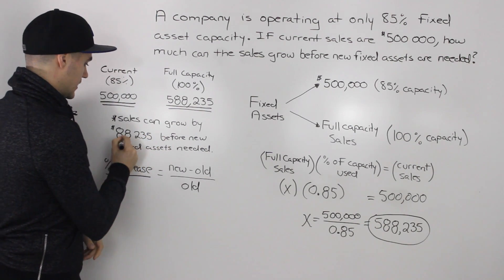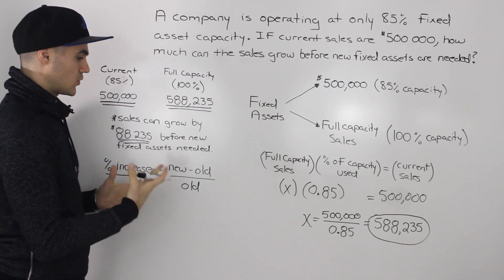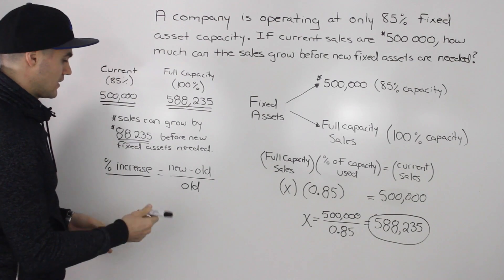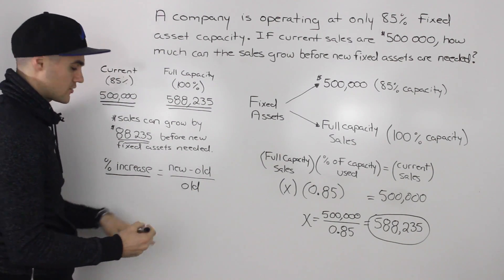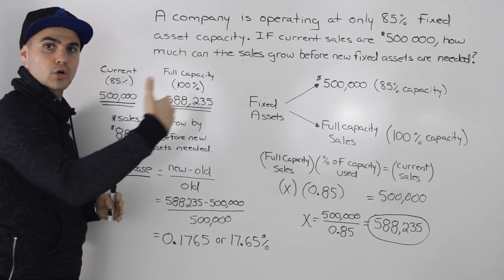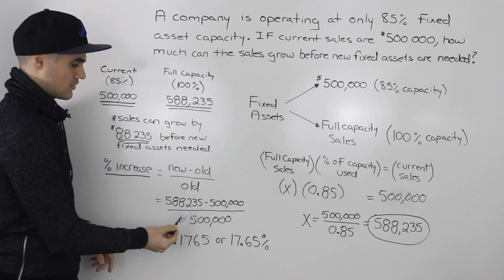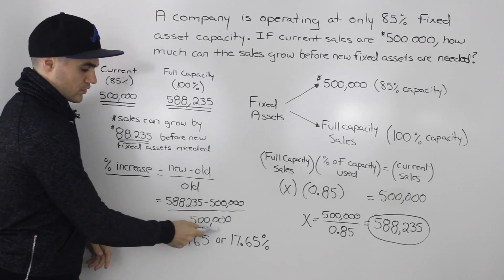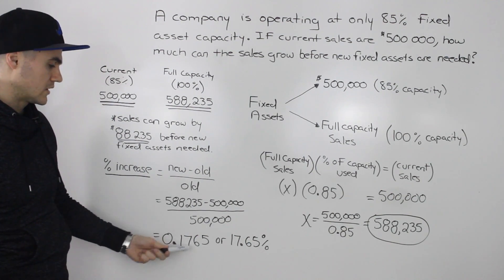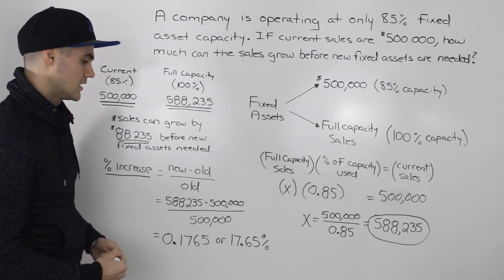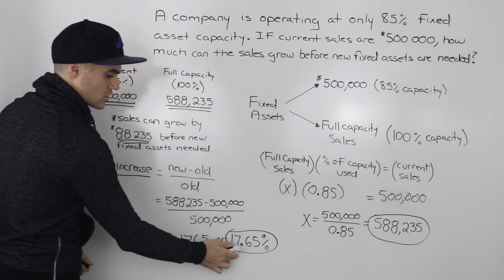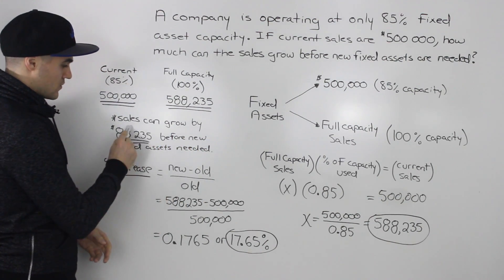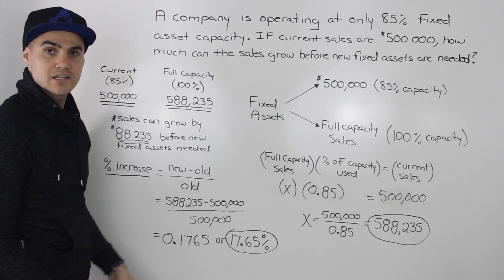Notice our first answer was in dollar terms — how much the sales can grow. But a lot of times questions will want the percentage increase in sales before any fixed assets are needed. Using the formula new minus old over old: the new value is the full capacity sales of $588,235, minus the old value of $500,000, all over $500,000. That gives us 0.1765, or 17.65%. So the answer can be either $88,235 or 17.65%.